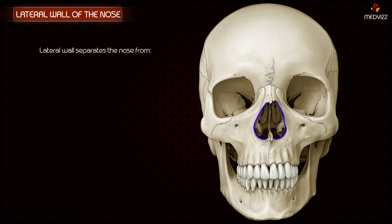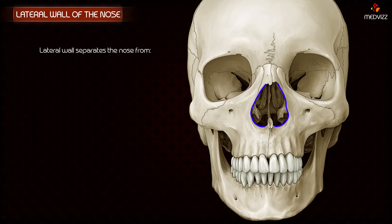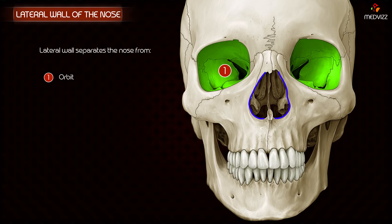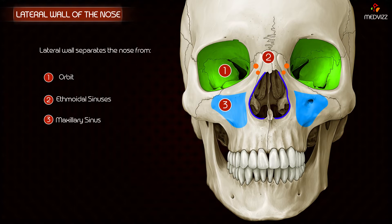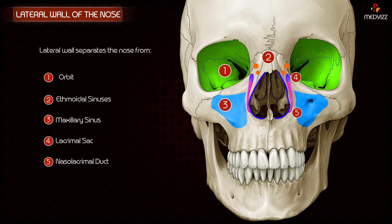The lateral wall separates the nose from the orbit above, with the ethmoidal air sinuses intervening, from the maxillary sinus below, and from the lacrimal sac and nasolacrimal duct in front.